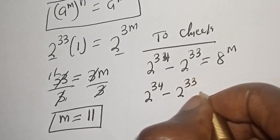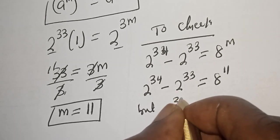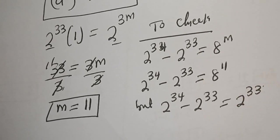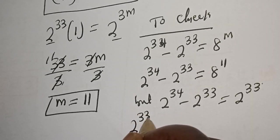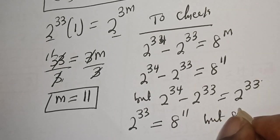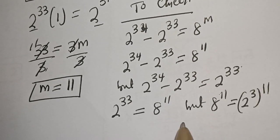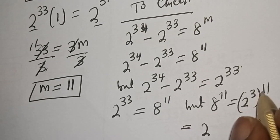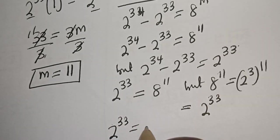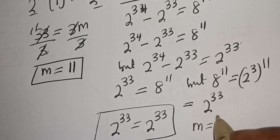2 raised to power 34 minus 2 raised to power 33 is equal to 2 raised to power 33. So the left-hand side is 2 raised to power 33, which must equal 8 raised to power 11. Now 8 raised to power 11 is equal to 2 raised to power 3 to the power of 11, which is 2 raised to power 33. Therefore the left-hand side 2 raised to power 33 equals the right-hand side 2 raised to power 33, which satisfies the given equation. So m is equal to 11.